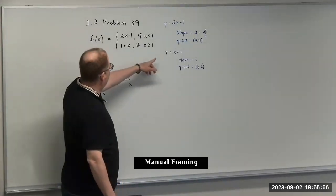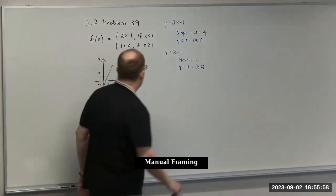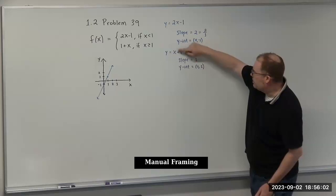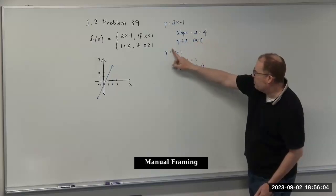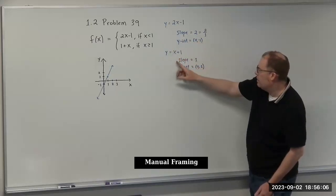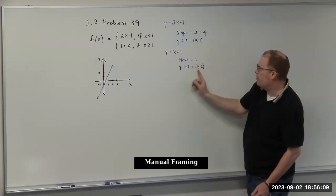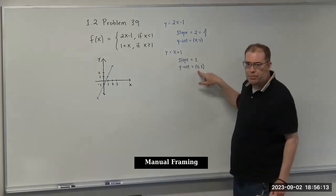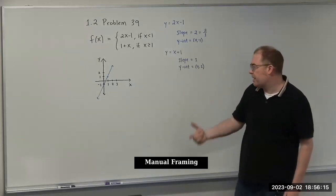Now for the other part, we have x plus 1, which is the same as 1 plus x. Here's our slope. It's written in slope-intercept form. There's a hidden 1 there, that's our slope. And then our y-intercept is going to be 0, 1. We can plot the y-intercept and then use the slope to obtain the second value.